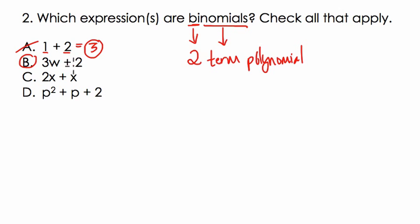B is a binomial, three W plus two. We don't know what W is, so we can't just add it. We can't say it's five groups of W. What's W? I don't know. Can't add it.